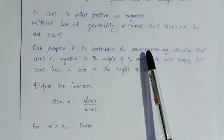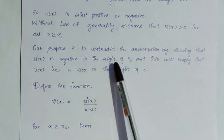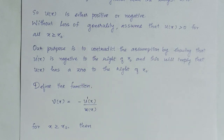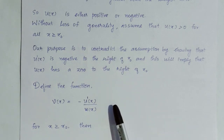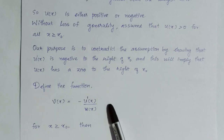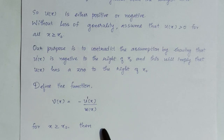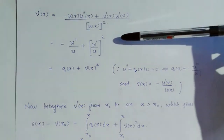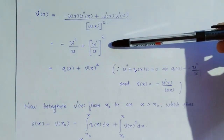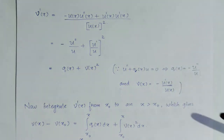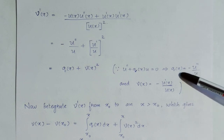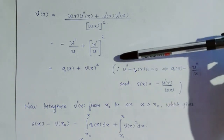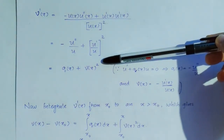Our aim is to contradict the assumption by showing that u'(x) is negative to the right of x0, which will imply that u(x) has a zero to the right of x0. Define a function v(x) = -u'(x)/u(x) for x ≥ x0. Then v'(x) = -u''(x)/u + [u'(x)]²/u². Since -u''(x)/u = q(x) and -u'(x)/u(x) = v(x), we get v'(x) = q(x) + [v(x)]².